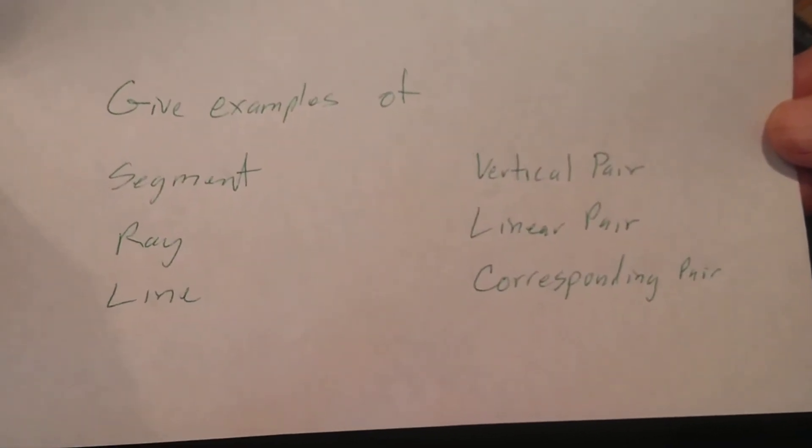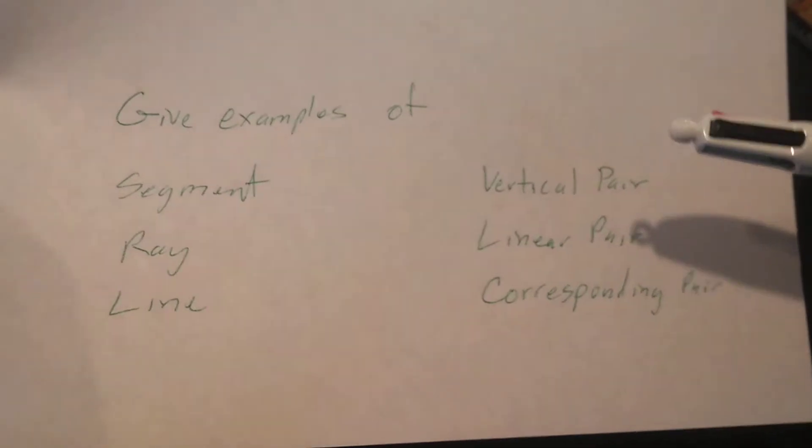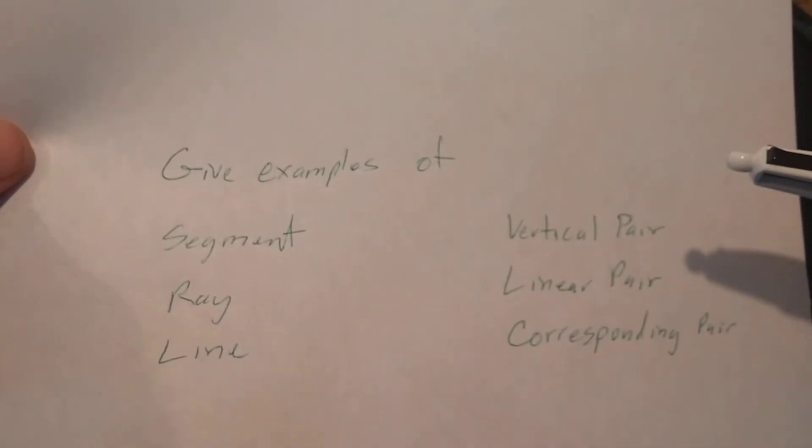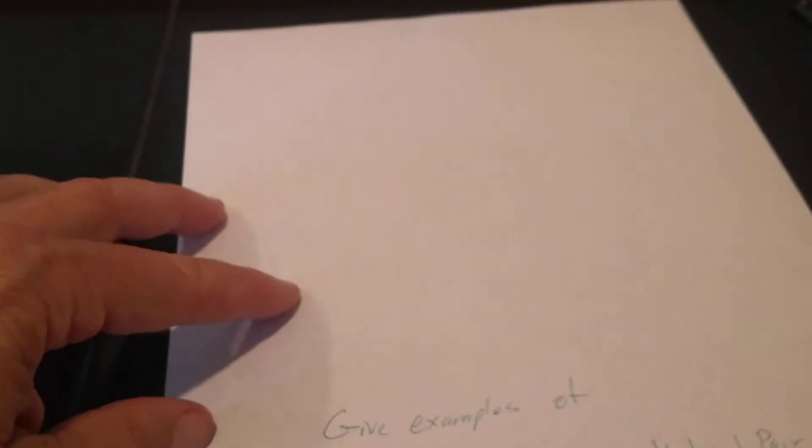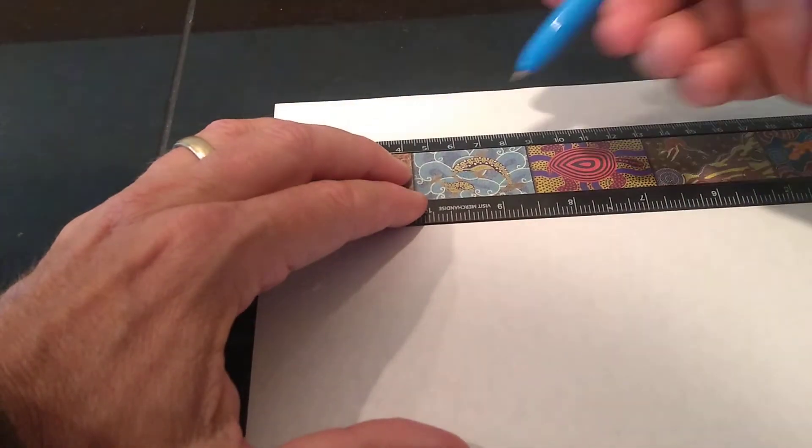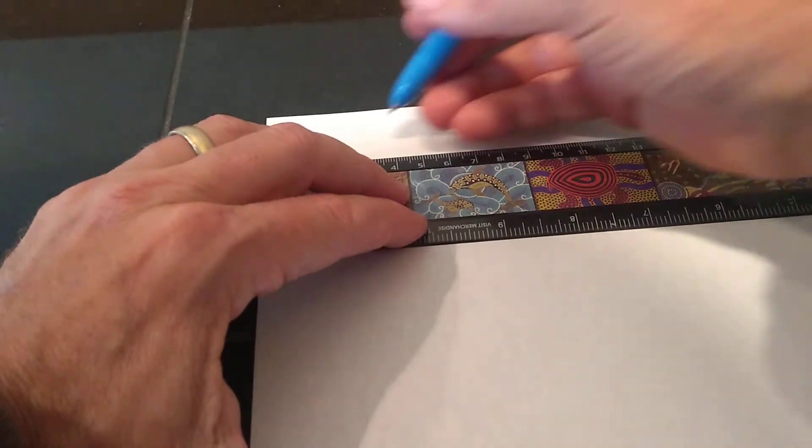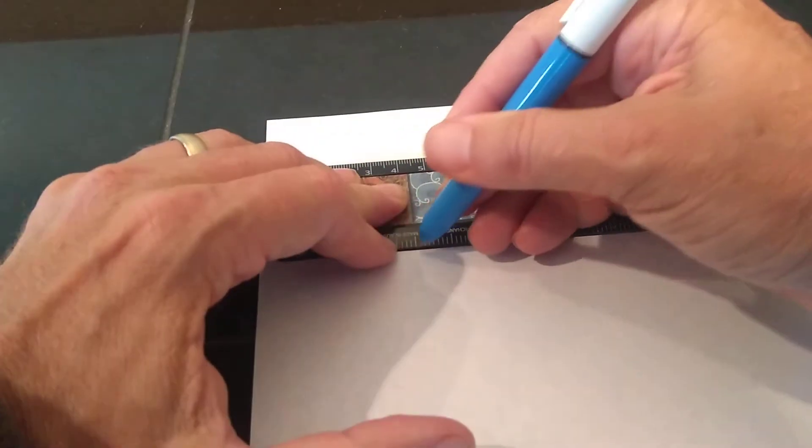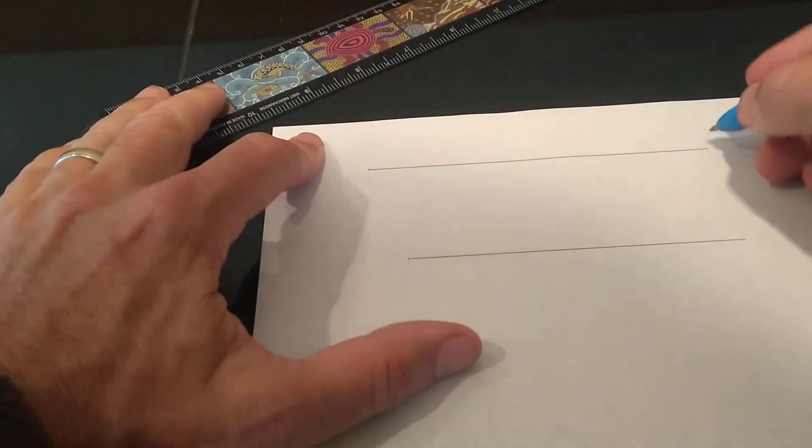And so on the student version, it should be blank because they're going to fill these in. But then on the teacher version, the key, they're going to be filled in with examples. All right. So anyway, so first of all, draw a couple of parallel lines. We know we have to have parallel lines, that's in the rubric.